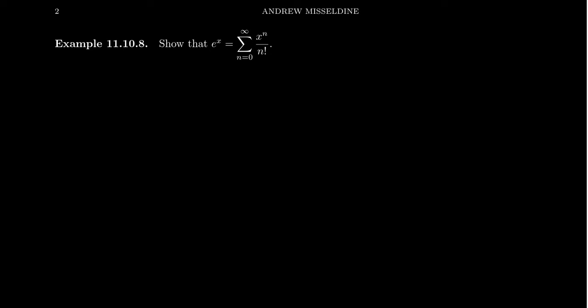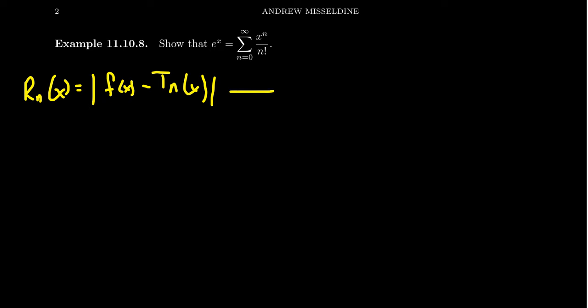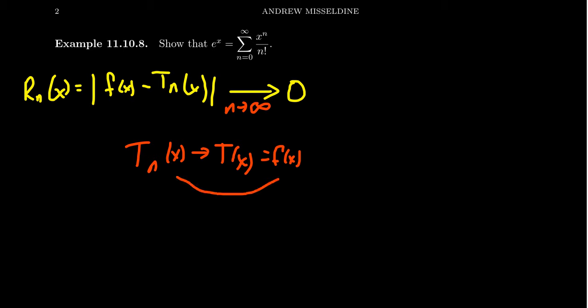In order to show that e to the x equals its Maclaurin series, we have to show that the remainder term R_n of x — which is f of x minus its Taylor polynomial — converges towards zero as n goes to infinity. As the Taylor polynomials converge towards the Taylor series, we want the difference between the function and the polynomial to go to zero. That would force the function to equal its Taylor series.